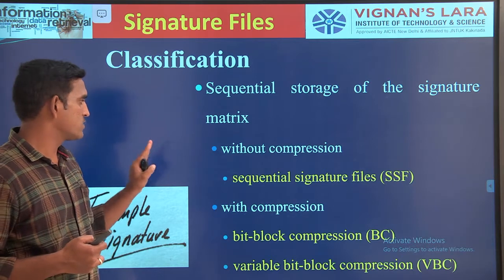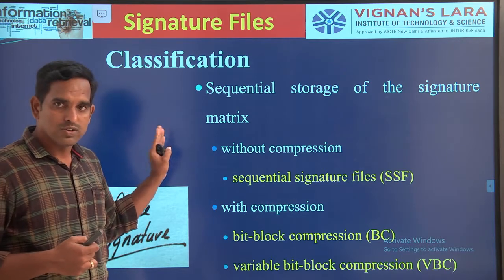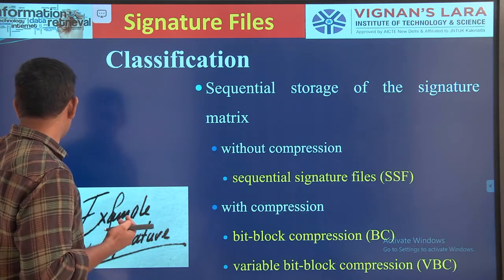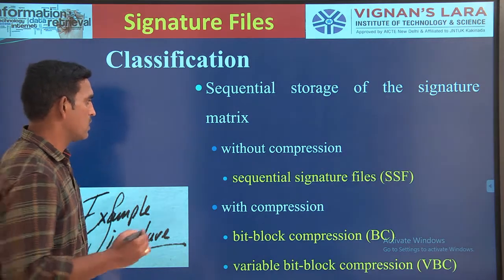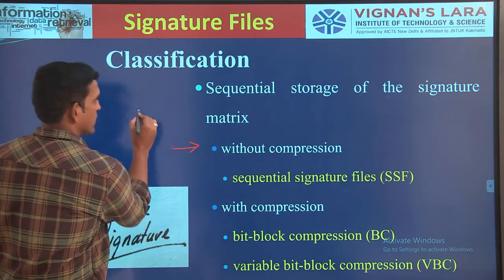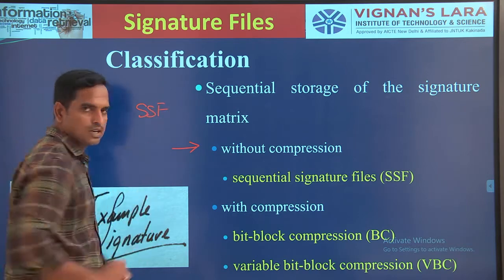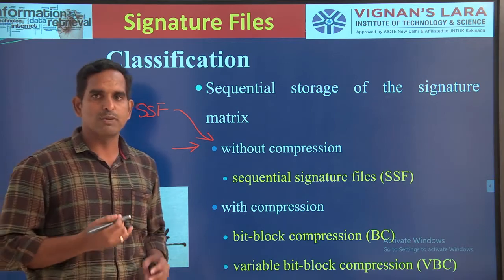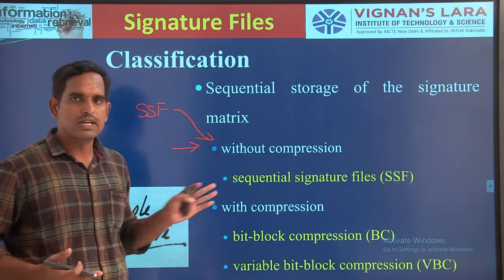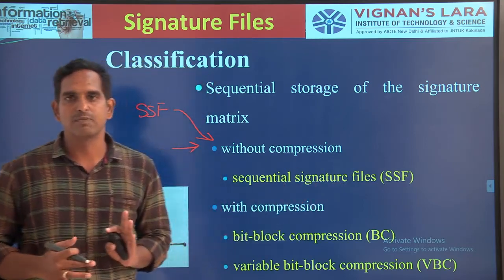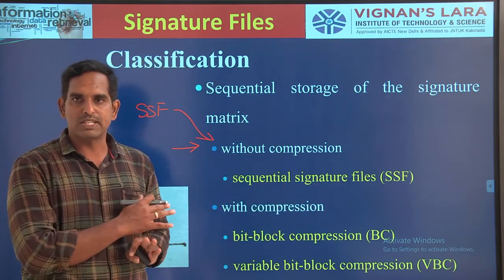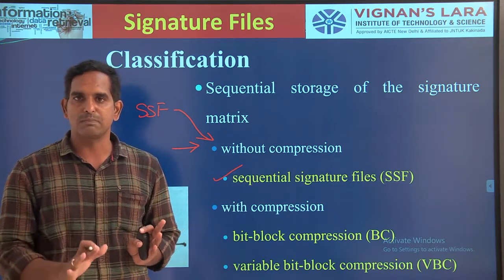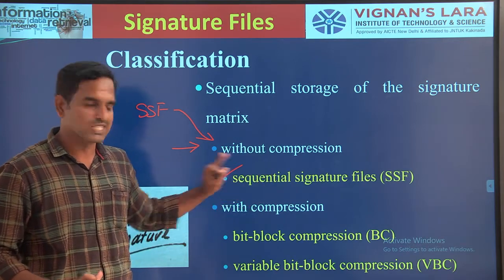The sequential storage of your signature matrix — the sequential storage you have done — can be implemented with some classification. The first classification is: your sequential signature file (SSF) can be done without compression. If you do not have the compression, we will be calling it the sequential signature file. That is the basic method — whatever sequential signature file you are implementing without compression, we call it the basic sequential signature file.